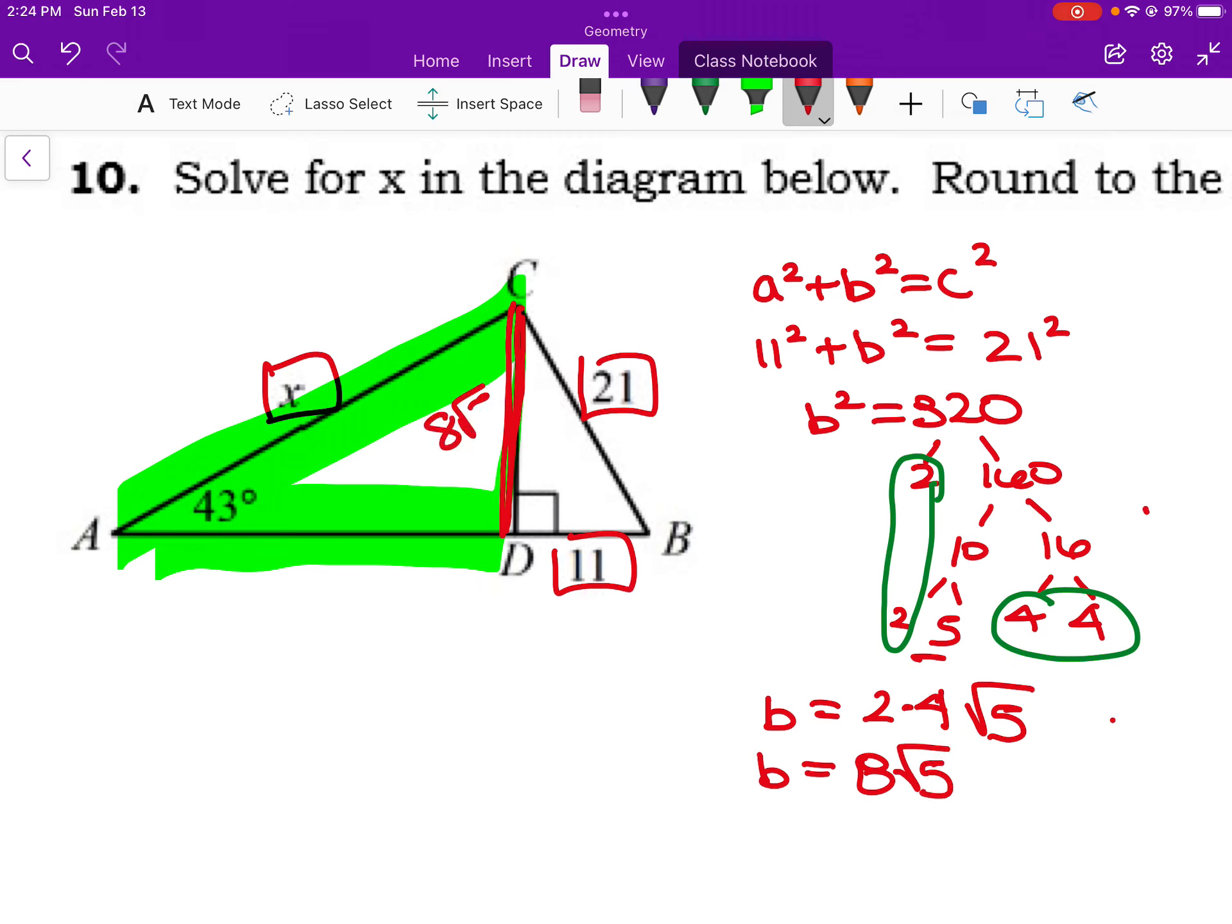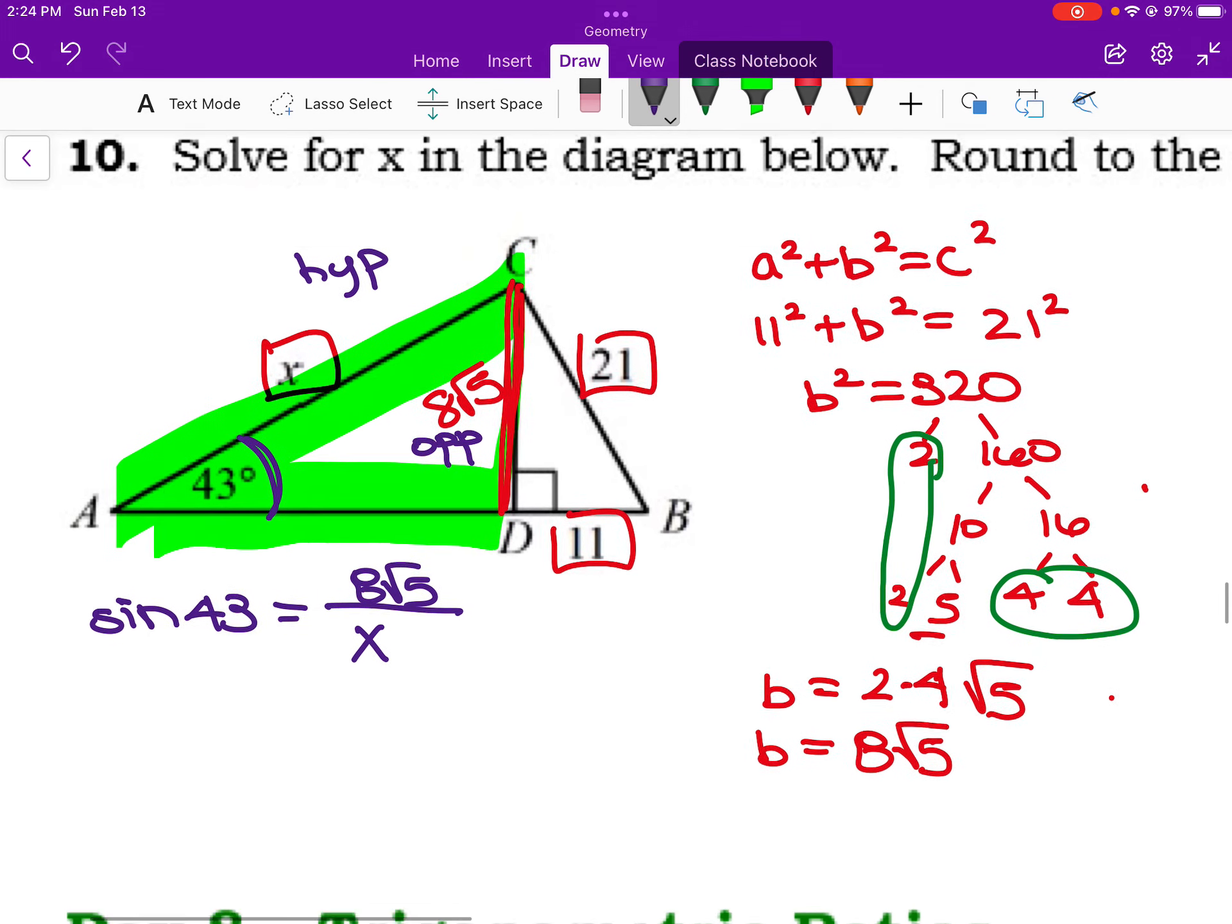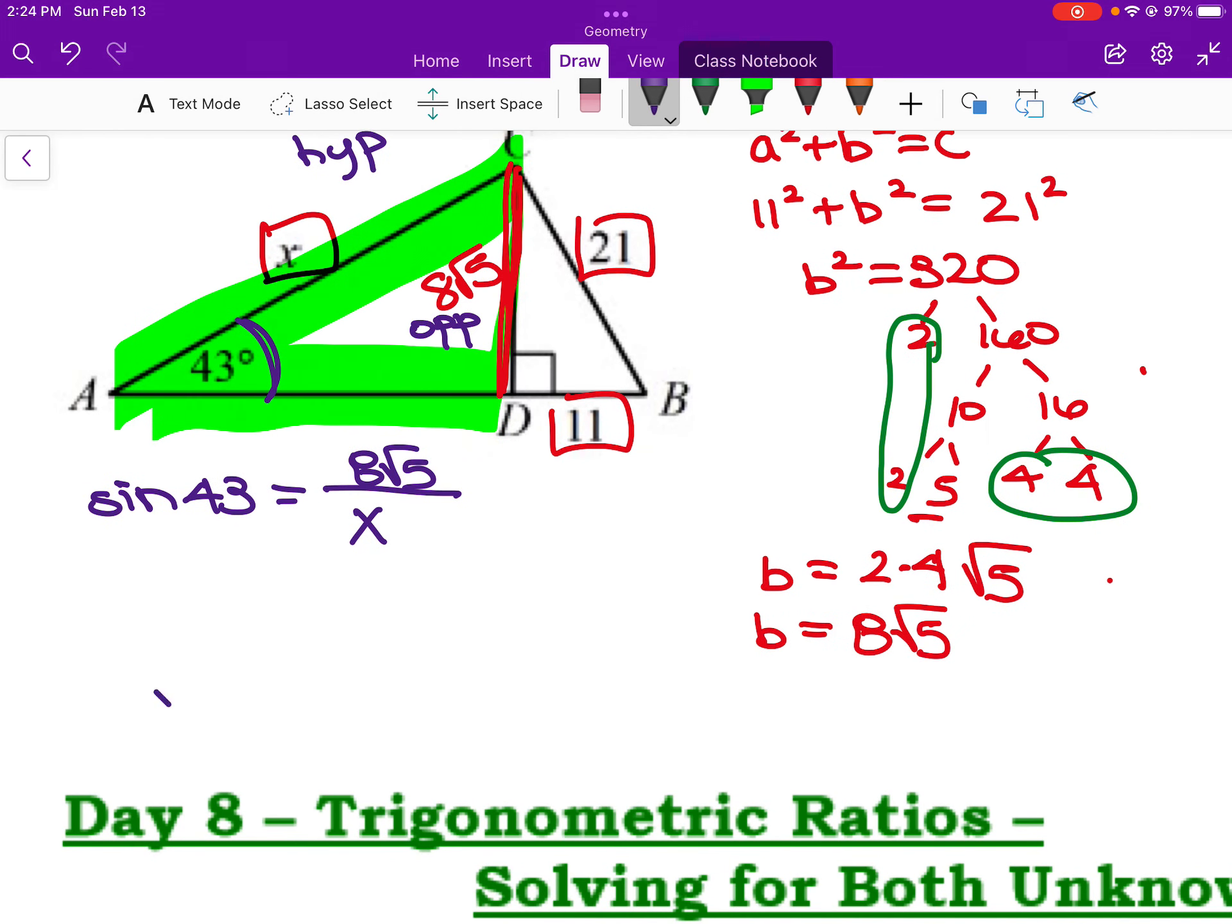So that is the height here, 8 root 5. So if I'm now able to notice that with respect to 43 degrees, this is an opposite and a hypotenuse. And those are the elements of a sine ratio. So sine of 43 degrees equals 8 root 5, opposite, over hypotenuse, which is x. Variables in the denominator, once again. And we're also dealing with, we're going to be rounding anyway, so we could actually type that 8 root 5 into our calculator.